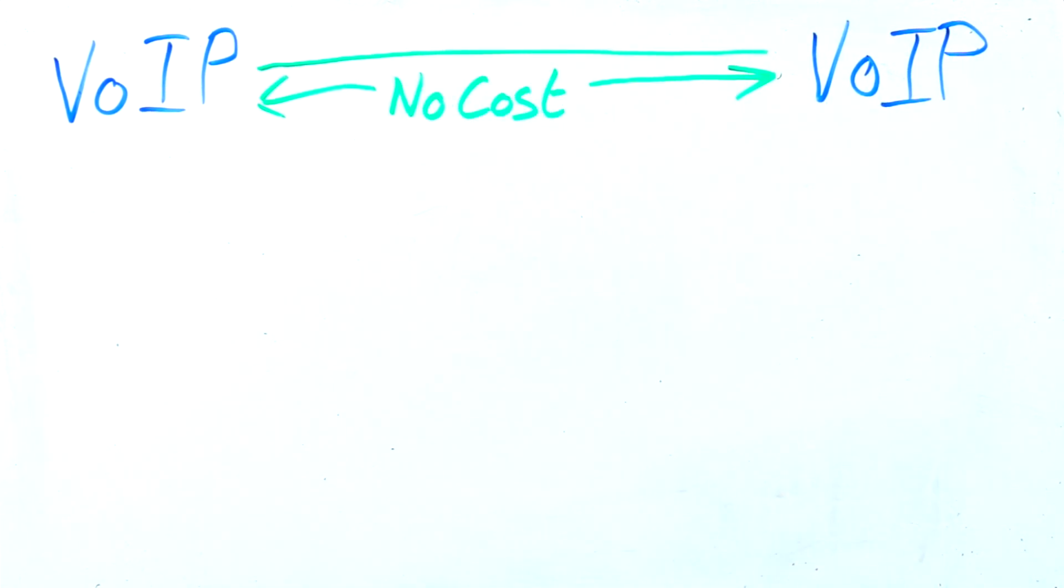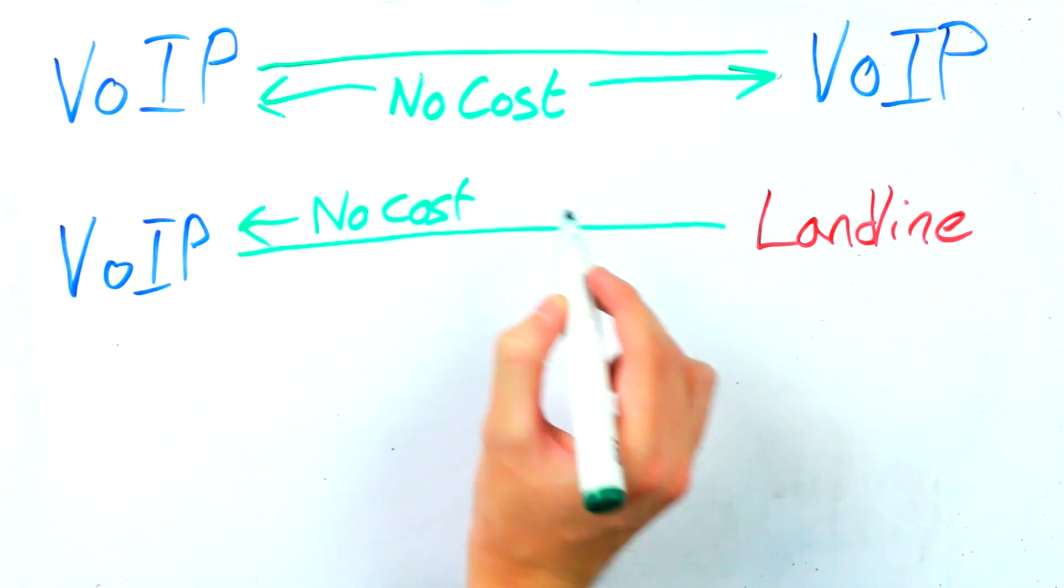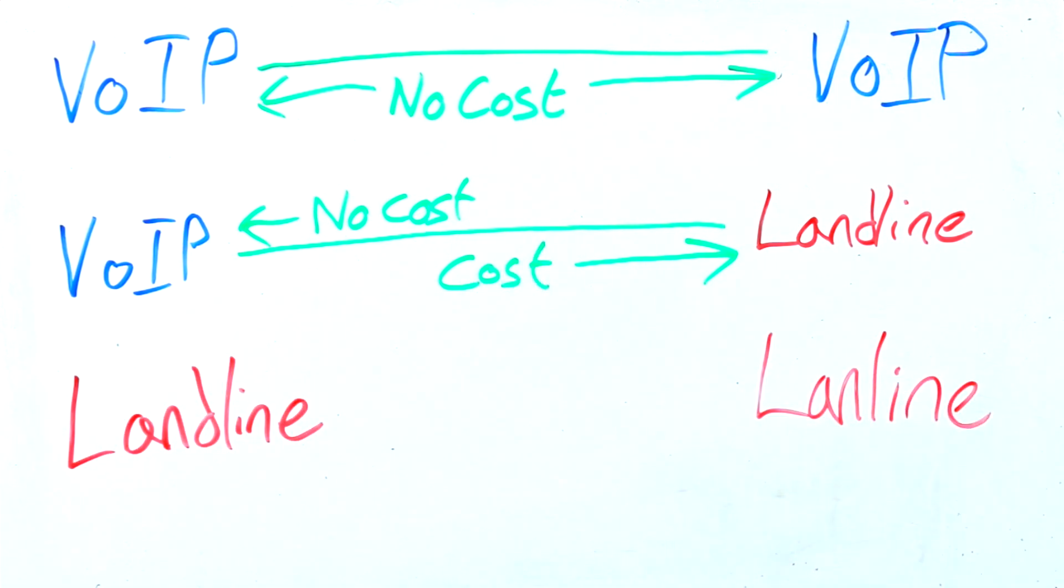But you're probably wondering what is the advantage to using a VoIP phone over a standard landline phone, well the biggest one is simply cost. When you use a VoIP phone there is no cost for you to make or receive calls and no need to pay for an extra landline package from your network provider. All you need is an internet connection.